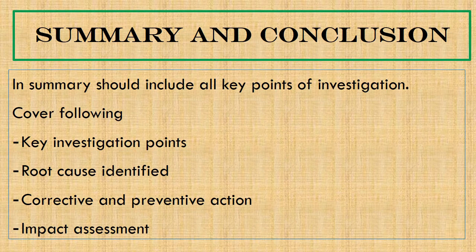The next important part is summary and conclusion. Whenever there is less time to read the deviation, the auditor or reviewer directly goes to the summary and conclusion part. In the summary and conclusion part, all key points of the investigation shall be covered — including root cause identified, corrective and preventive actions, and impact assessment.